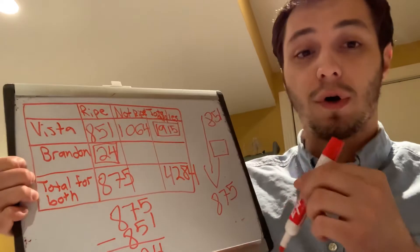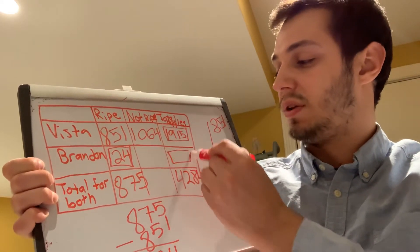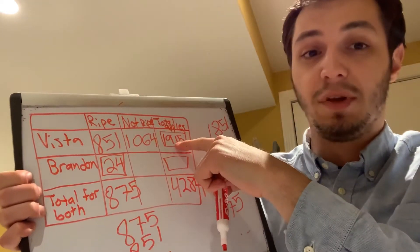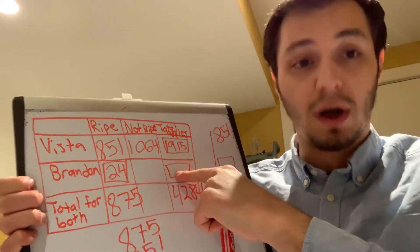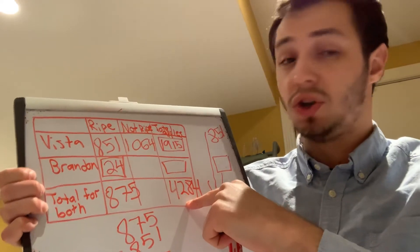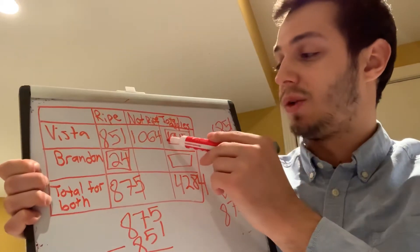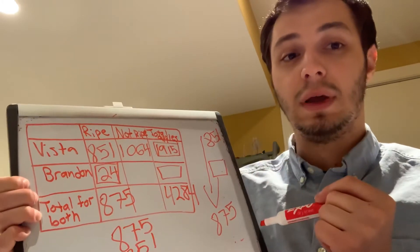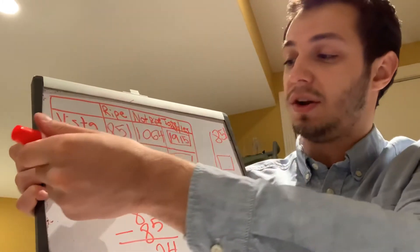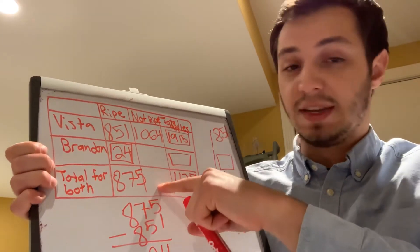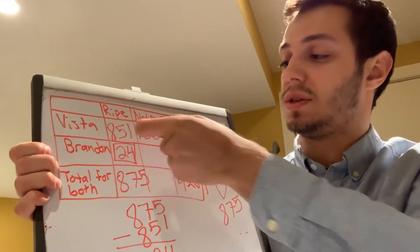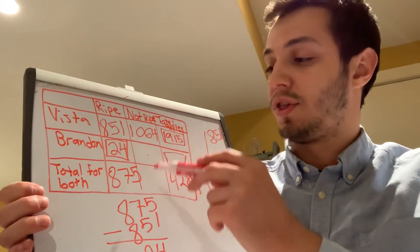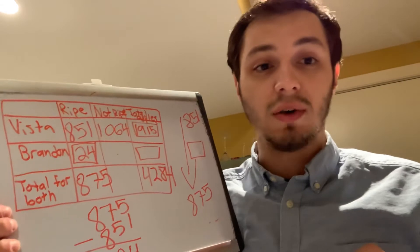Now we can solve for another missing number by making a number family going down: 1,915 is my small number, the missing number is also small, and 4,284 is the big number. So you're going to subtract 1,915 from 4,284 to find that missing number. Once you've found it, make a number family going across to find the next missing numbers. Pause the video and find the other three missing numbers, then I'll see you when you're done.